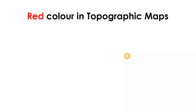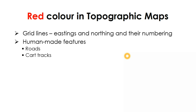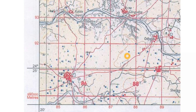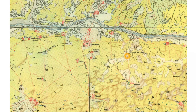Next, red color is used for a number of features. Most importantly, grid lines — the eastings and northings and their numbering — are done using red color. A number of human-made features are also shown in red, including roads, car tracks, cart tracks, buildings of various types, and huts — both permanent and temporary. The values of eastings and northings are also shown using red color. Looking at the map, a lot of red colored features are visible — many lines running here and there, which are all car tracks.